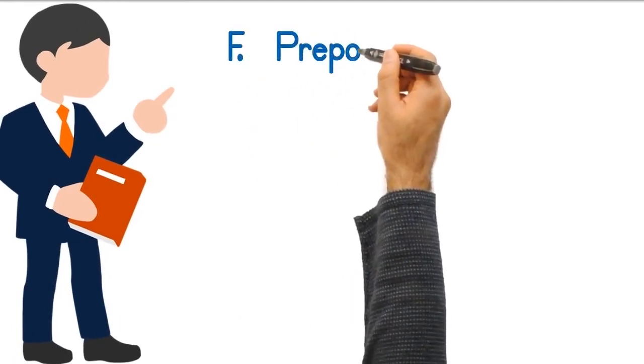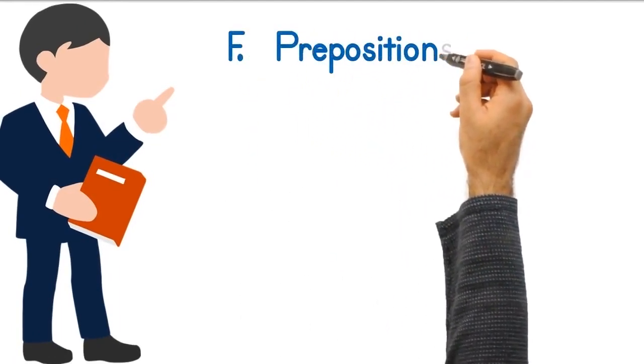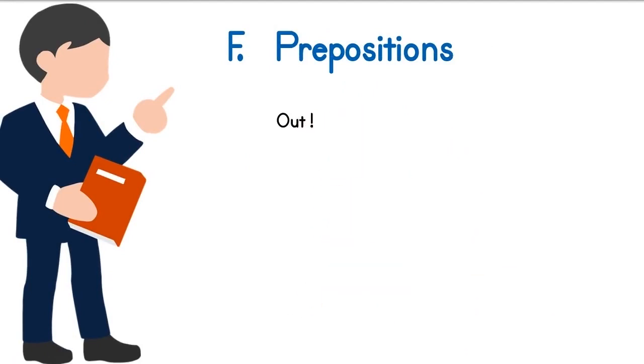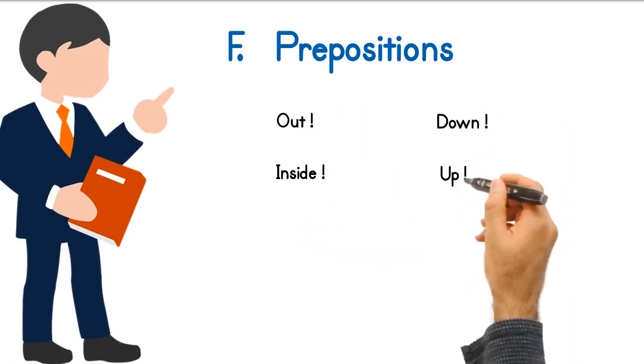F. The following are examples of prepositions used as interjections: Out, Inside, Down, Up.